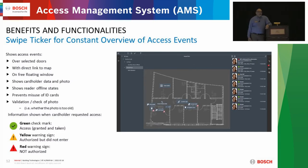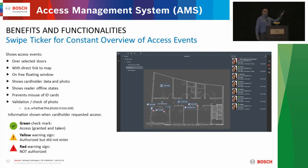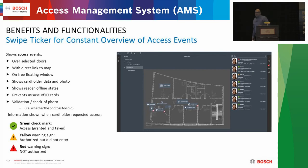We have Swipe Ticker, which gives you the ability to see who's passing through your doorways. As they present their cards, it pulls up on the right-hand side. You can pull this Swipe Ticker out and drop it off somewhere else on your screen, so you can monitor and maintain that while doing other activities. It gives you that ability to see who's coming through those doors, with nice green, yellow, and red indicators based on what the event might be.